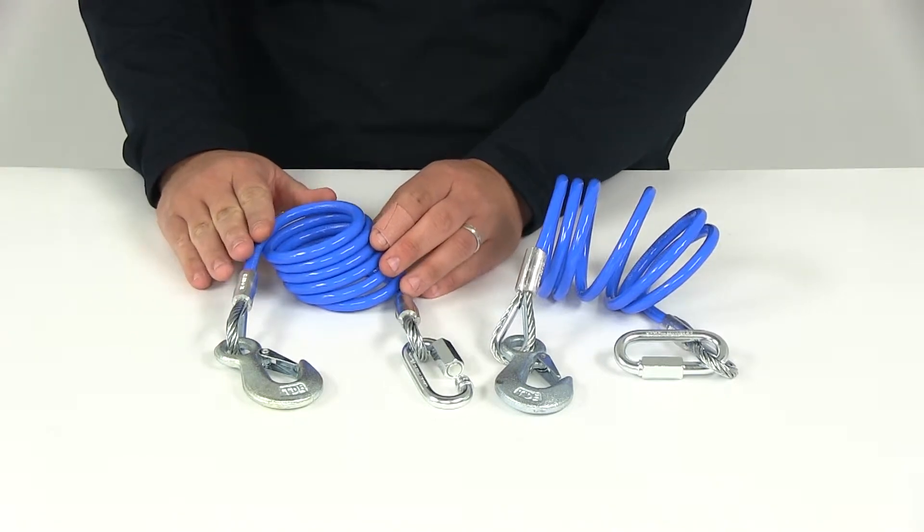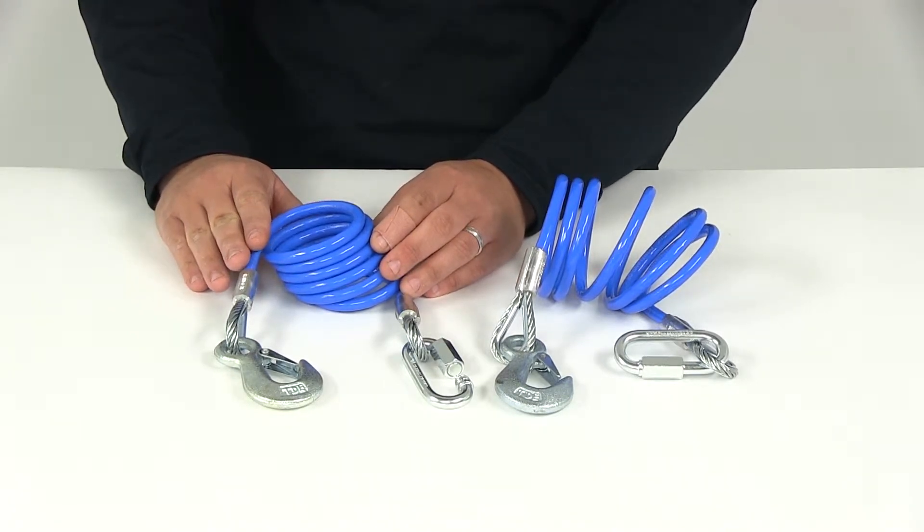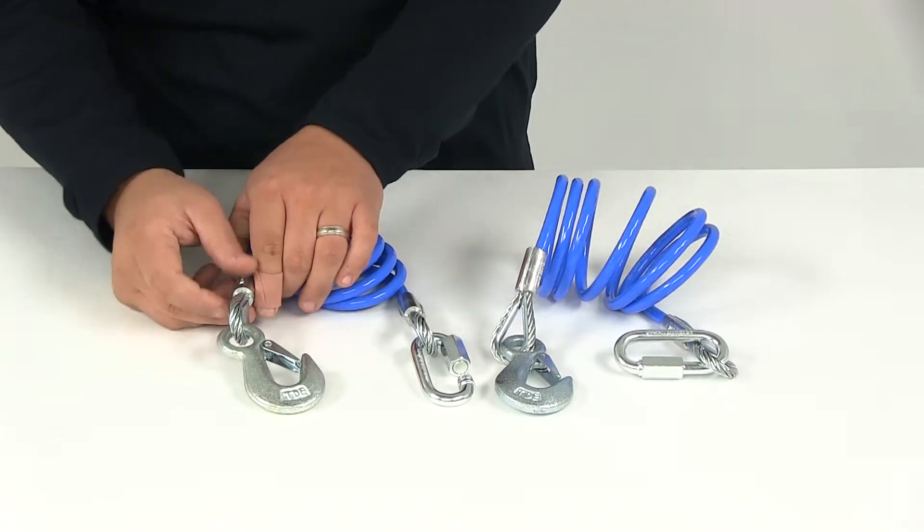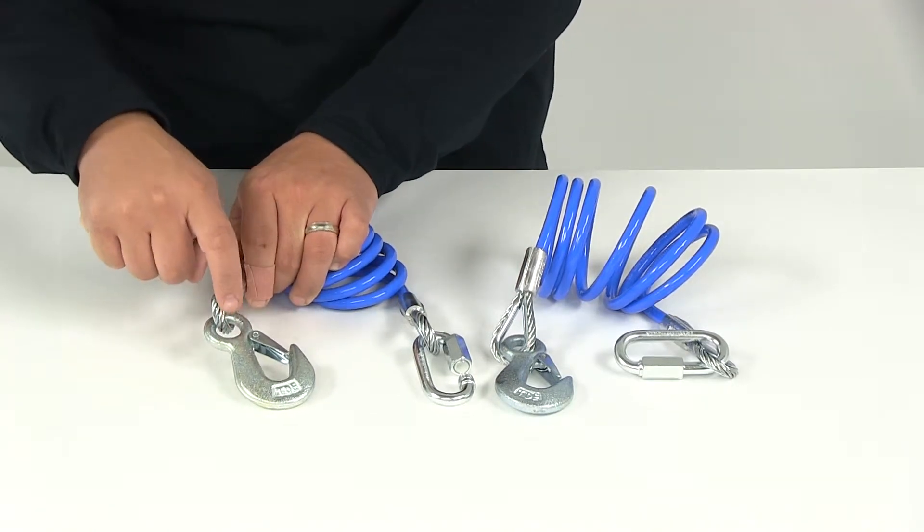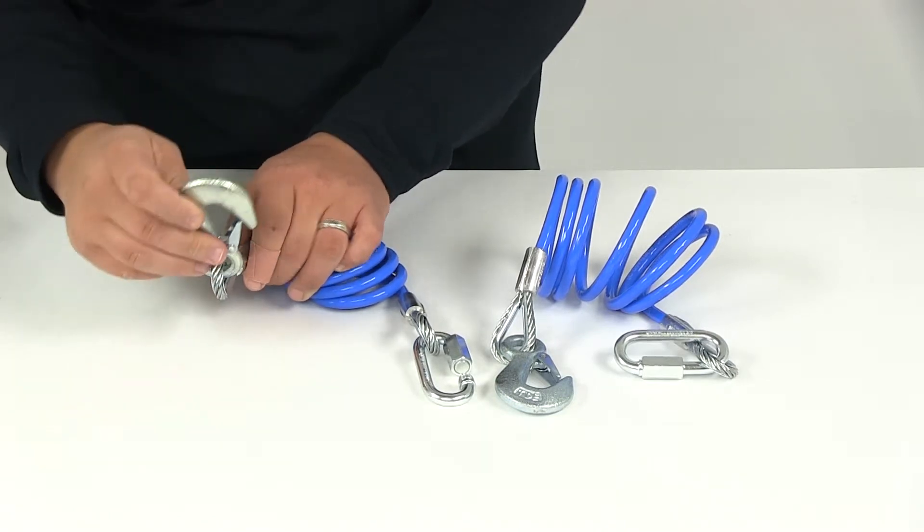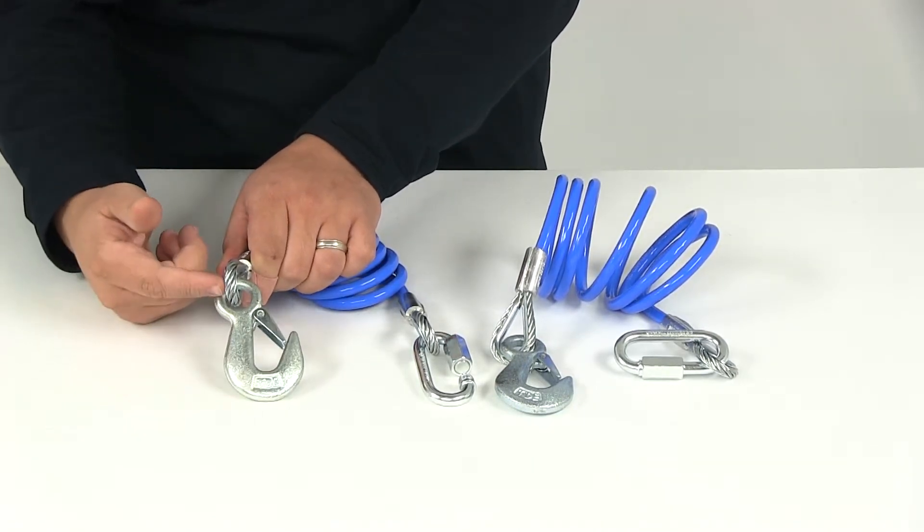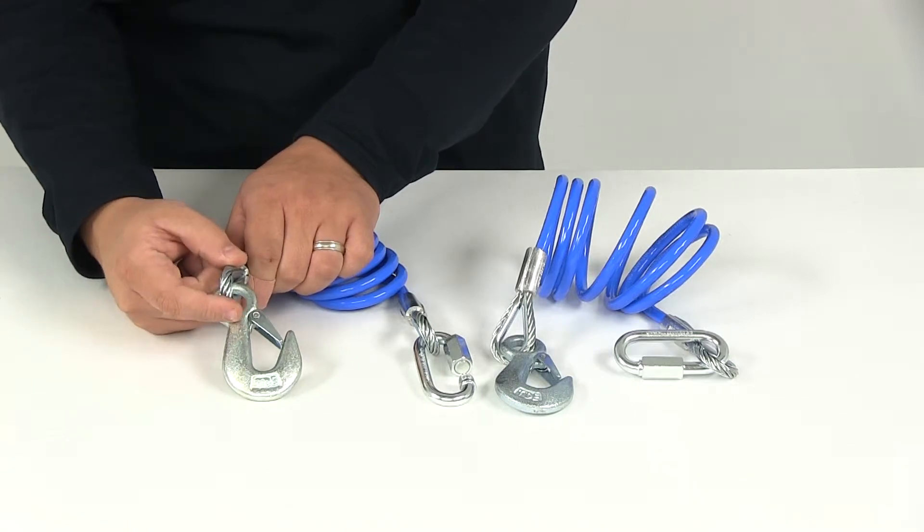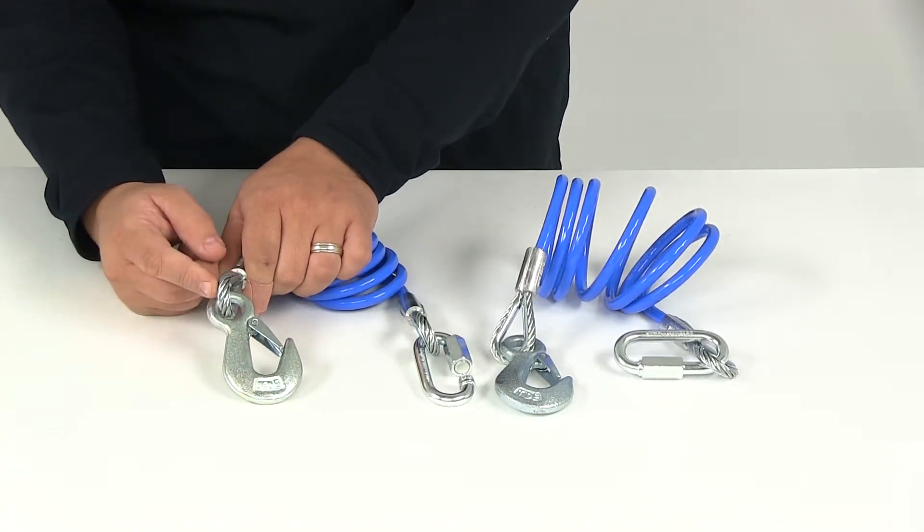The cables have a vinyl coating that keeps them from scratching and chipping your tow bar system. Another neat feature is the solid steel piece on the eyelet of the cable, which allows the hook and connection point to rotate freely without fraying or unthreading the actual cable. That's a great feature to have.